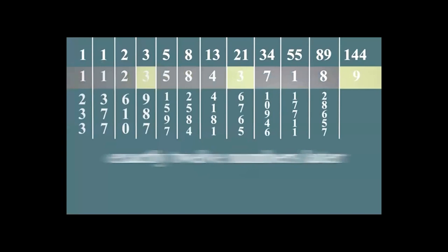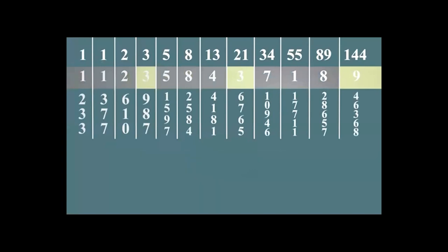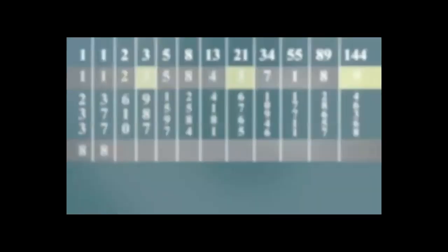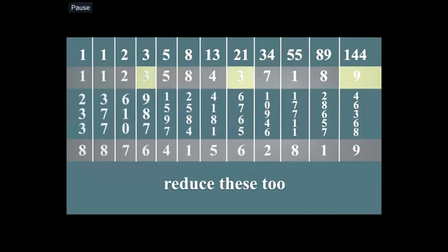Continuing the Fibonacci sequence and reducing: 233 gives 8, 377 gives 8, 610 gives 7, and so on. The sequence is extended on an Excel spreadsheet. The first reduced sequence reads: 1, 1, 2, 3, 5, 8, 4, 3, 7, 1, 8, 9. Then continuing: 8, 8, 7, 6, 4, 1, 5, 6, 2, 8, 1, 9.